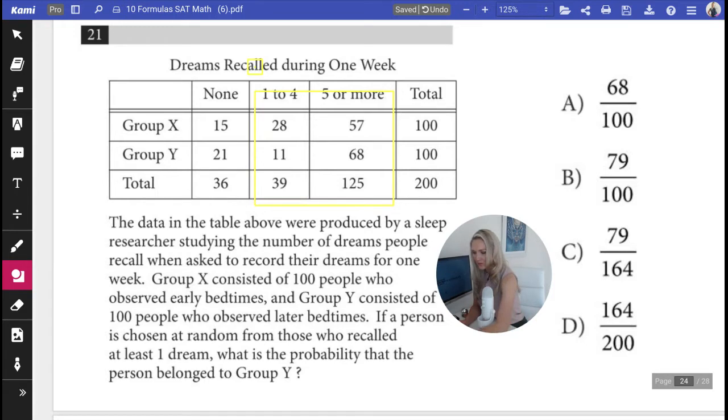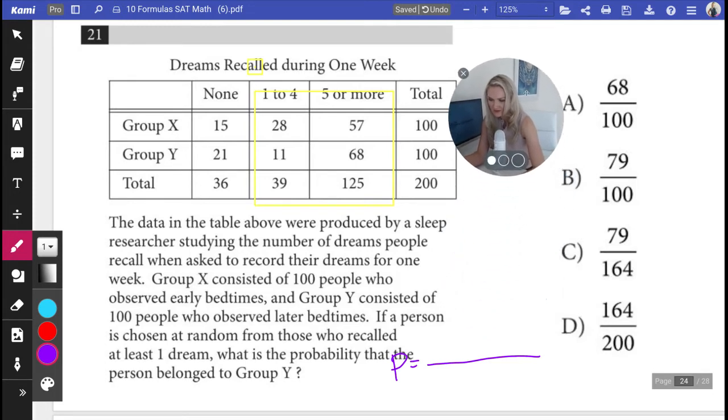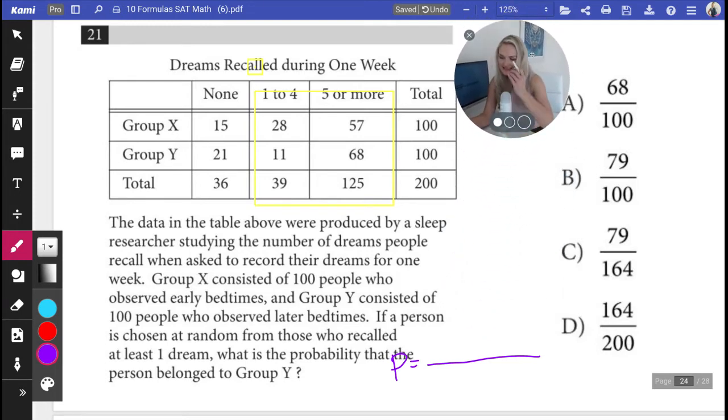Okay, now what is your total? Because your probability is equal to desired outcomes over the total outcomes. So what is your total outcomes? What is the number of people who saw at least one dream?